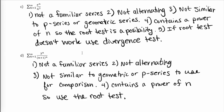In the last example, part d, going through the steps: it's not a familiar series, not alternating, and not similar to a geometric or p-series for comparison. But at step 4, it does contain powers of n, so I would start with the root test. Use the strategy box and the test summary in your notes to help get through the homework. And remember — if one test doesn't work, try another. The strategy box gives you a starting point.